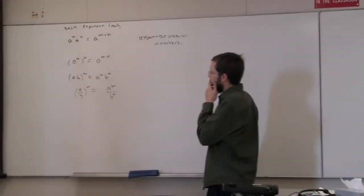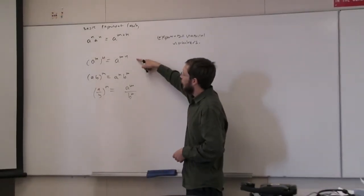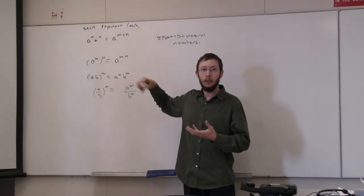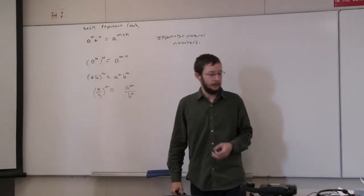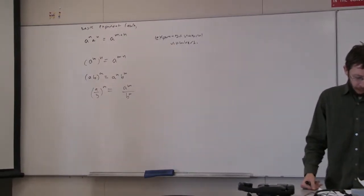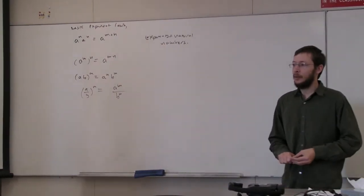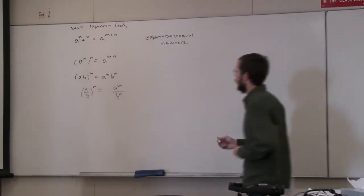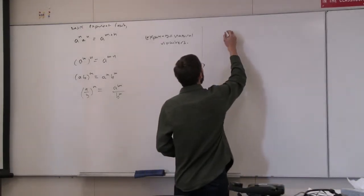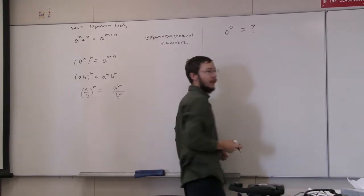Now we're going to take these exponent laws and start looking at more and more exotic exponents. The first slightly more exotic exponent we're going to consider is a to the zero. What's this equal to?